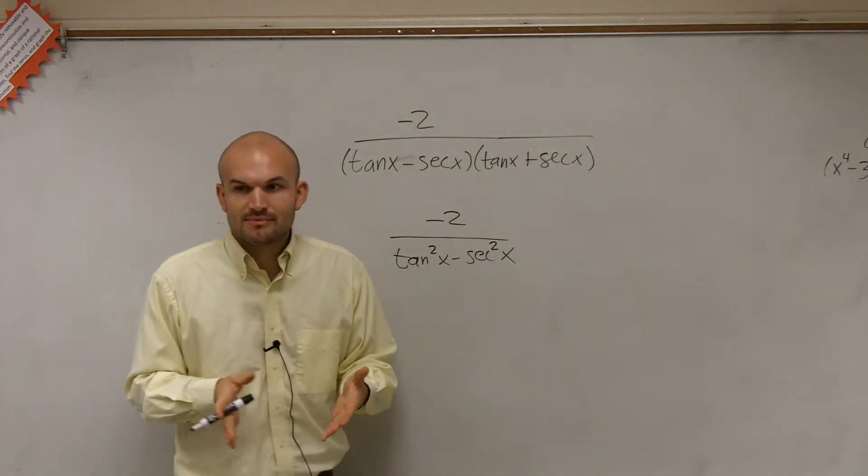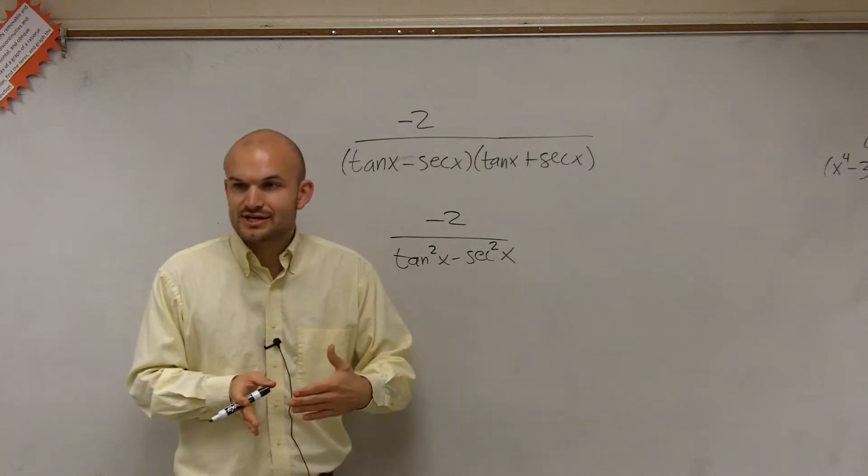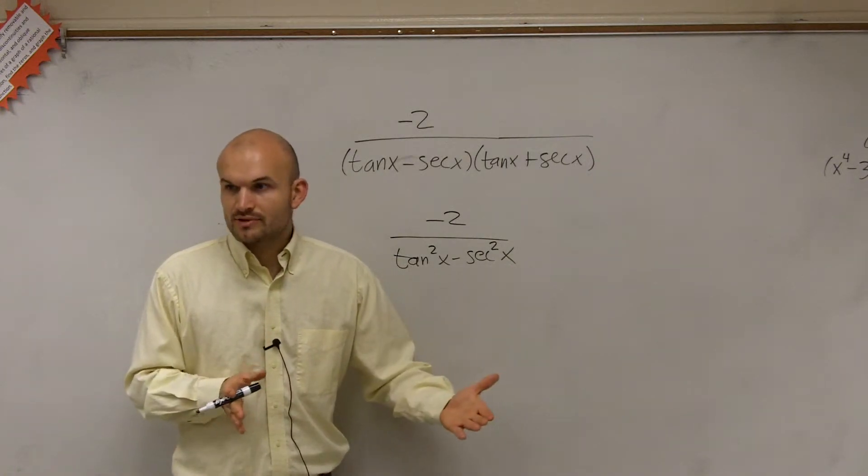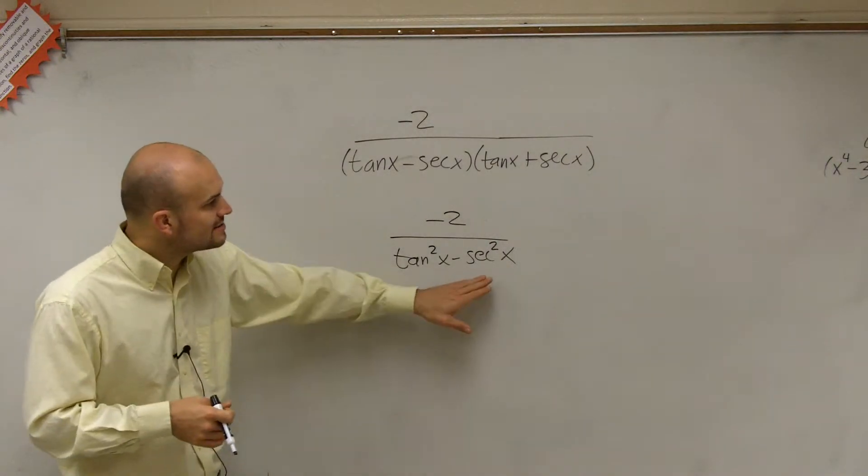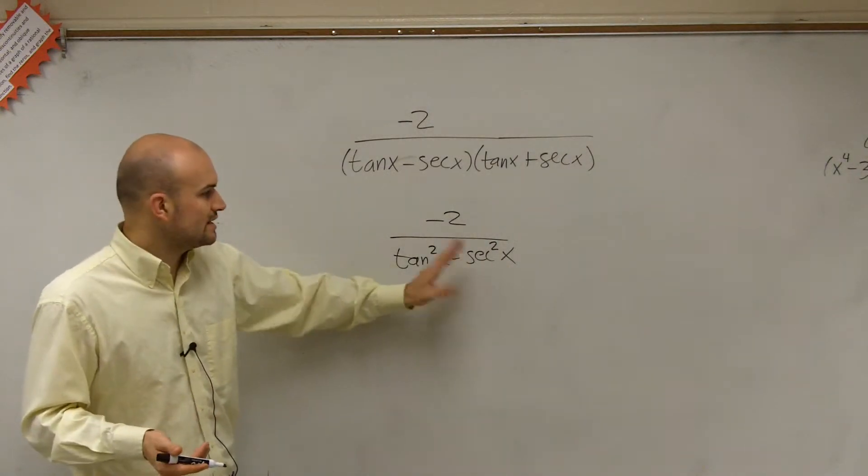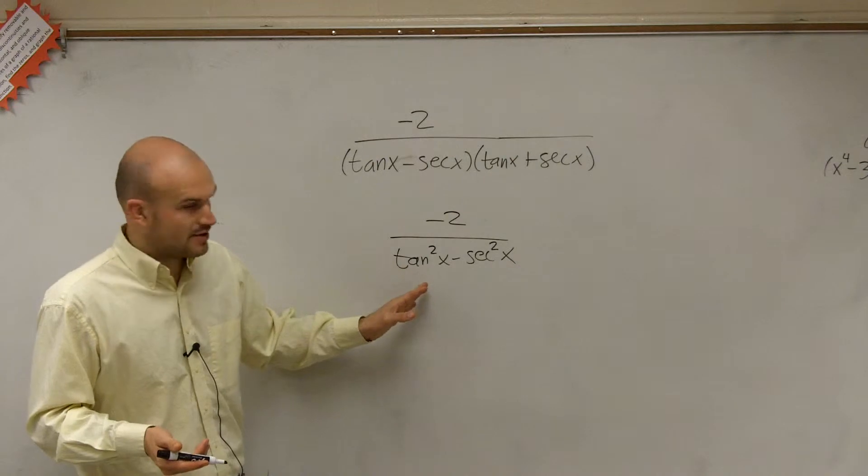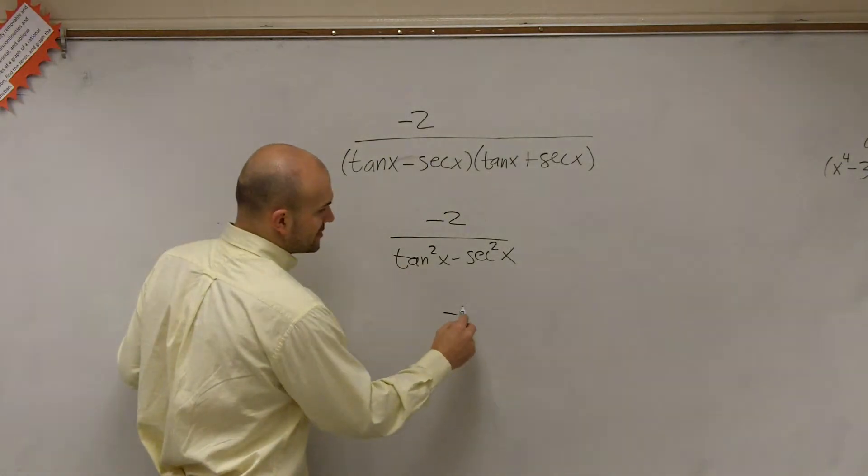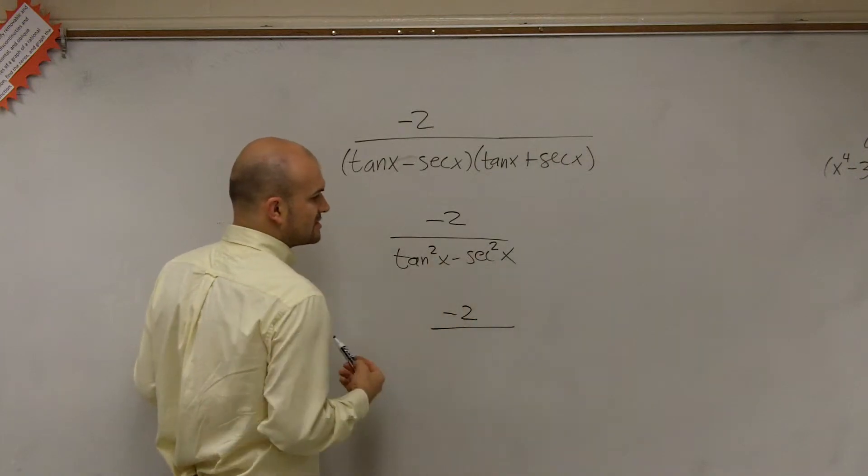Now, one thing I notice is, remember, by using my Pythagorean identities, I know that tangent and secant relate to each other, right? With the Pythagorean identities. So therefore, I can transfer either the tangent squared to a secant squared, or I can transfer the secant squared to a tangent squared. So what I decide to do is, let's transfer over secant to tangent squared.